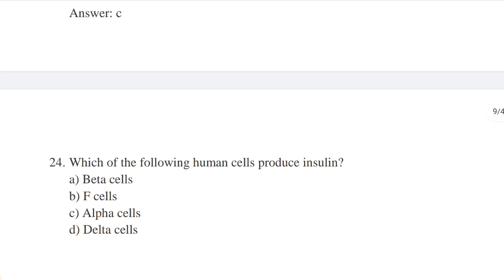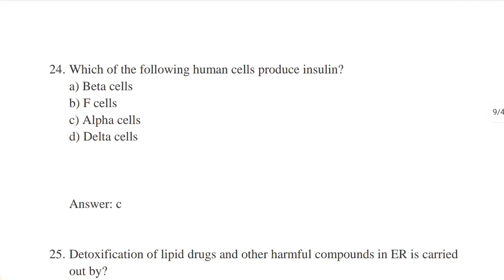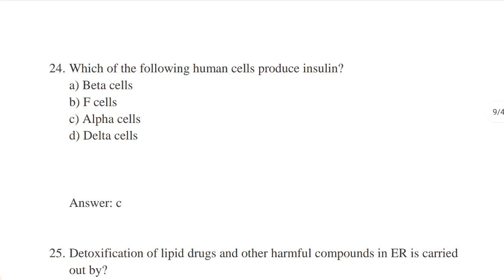Which human cells produce insulin? Options: beta cells, F cells, alpha cells, delta cells.